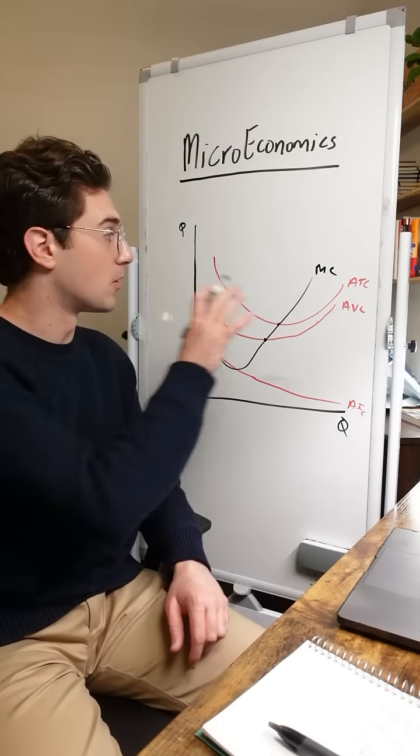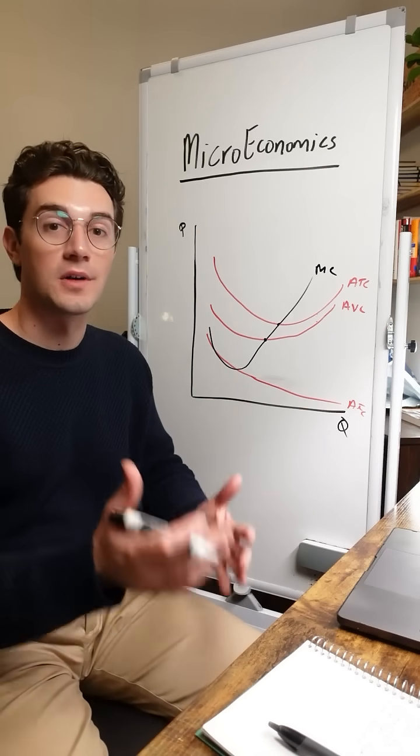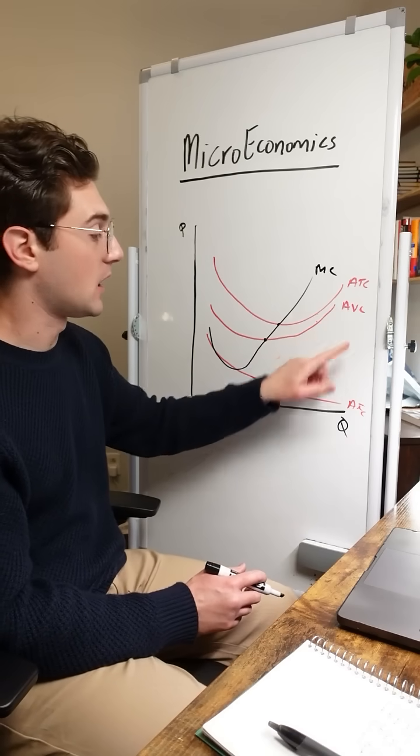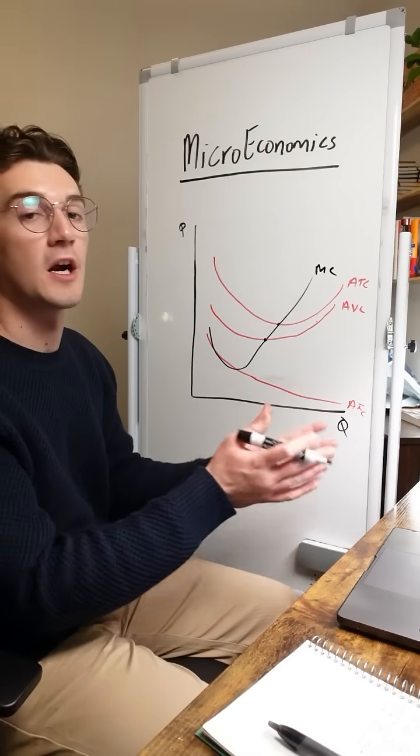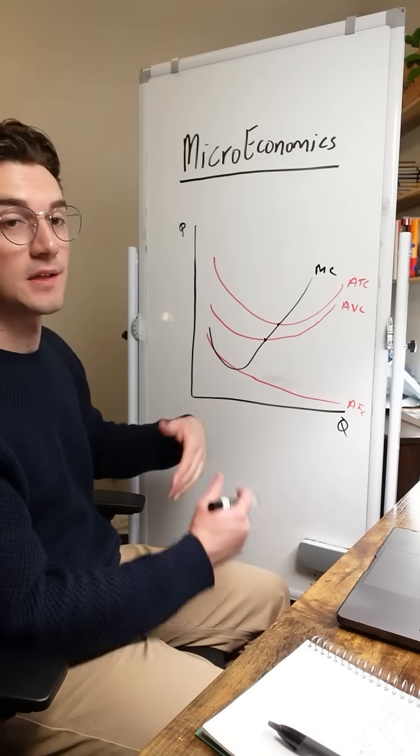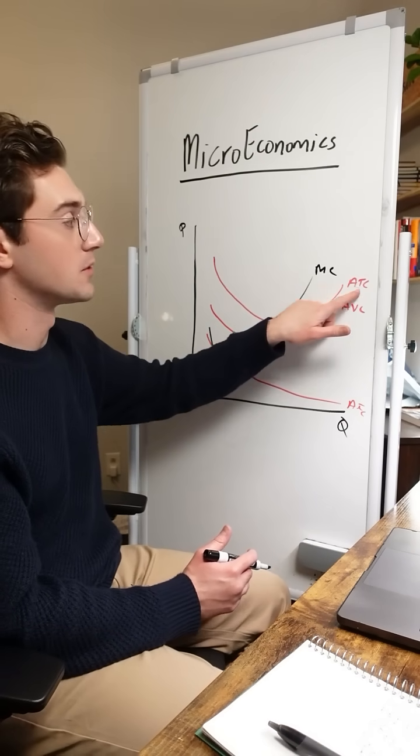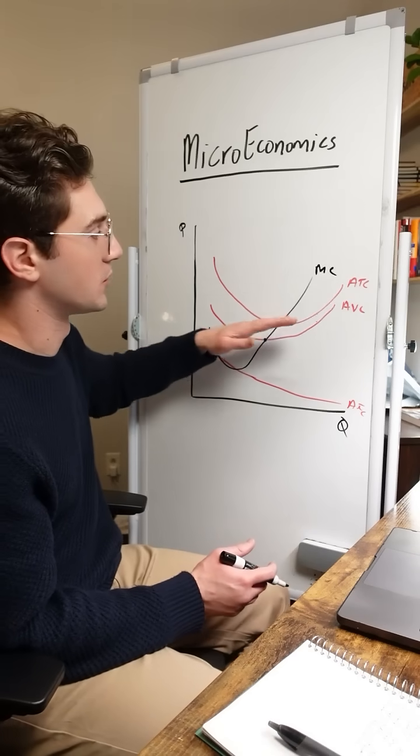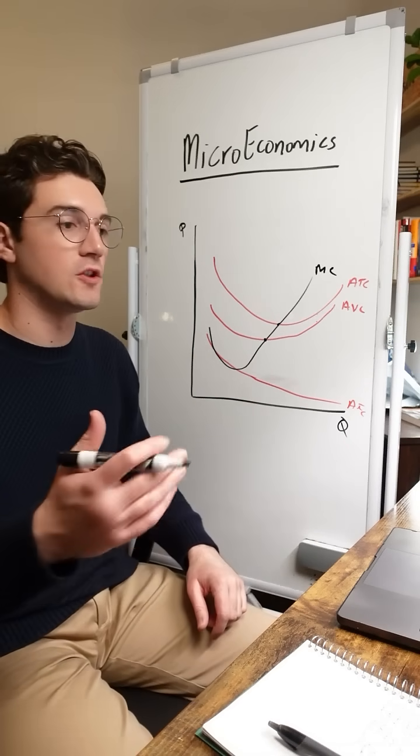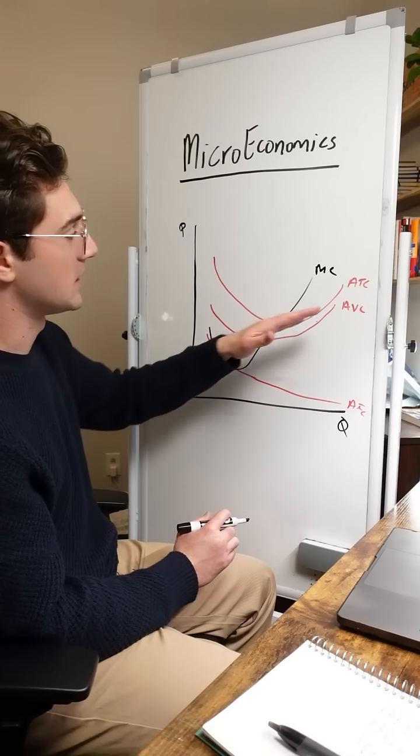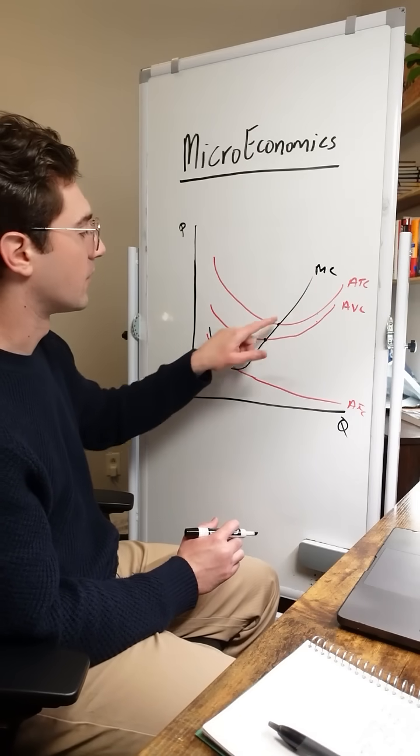The reason being is because marginal cost is the additional cost that a unit brings. This is going to be largely derived from variable cost because fixed cost stays constant no matter how many units we output. And when the marginal cost rises above the current average, whether it's variable or total, it's going to start dragging up those curves with it because each additional unit is getting more and more expensive. So that's why the marginal cost curve intersects the AVC and ATC at their minimum points.